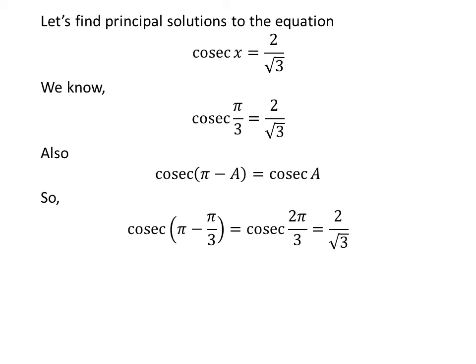Application of the above identity implies that cosecant of π minus π upon 3 equals 2 upon square root of 3. This implies cosecant of 2π upon 3 equals 2 upon square root of 3.